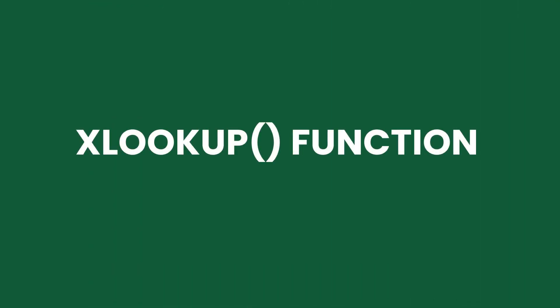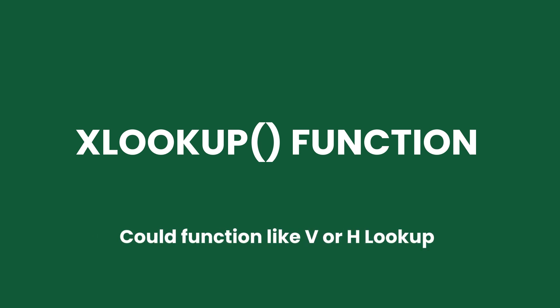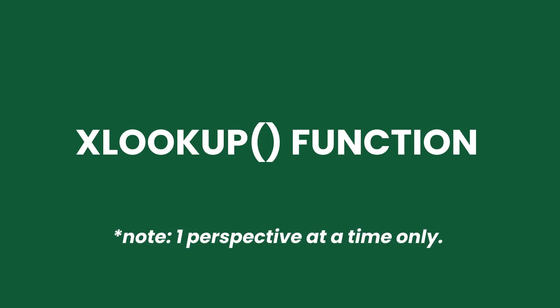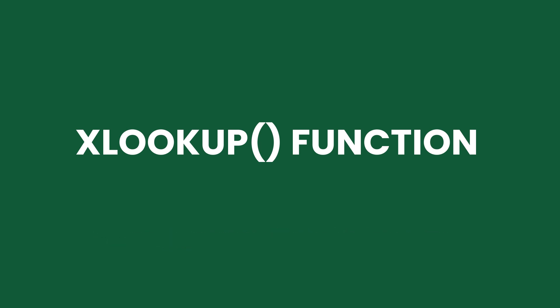XLOOKUP is a new addition to Excel's functions. It can work like a VLOOKUP or an HLOOKUP; however, instead of specifying your search and return column or row on the same array, you can assign them separately. Keep in mind that you can only follow a single lookup perspective with XLOOKUP — either vertical or horizontal.